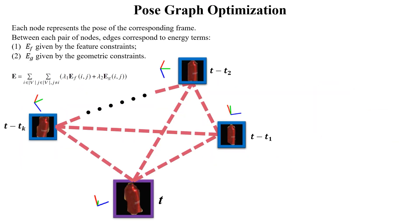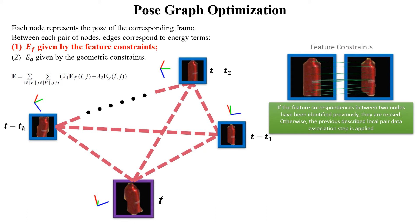In pose graph optimization, each node represents the pose of the corresponding frame. Between each pair of nodes, edges correspond to two kinds of energy terms. Ef is given by the feature constraints. Specifically, if the feature correspondences between two nodes have been identified previously, they are reused. Otherwise, the previously described local pairwise data association step is applied.